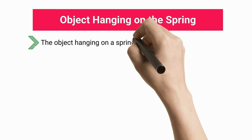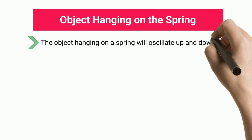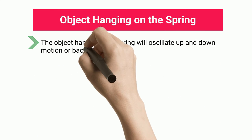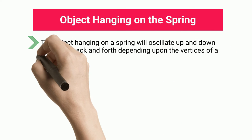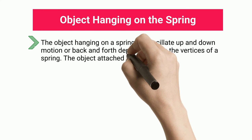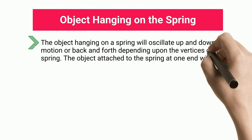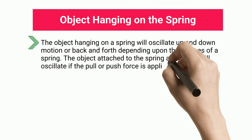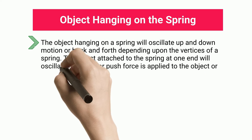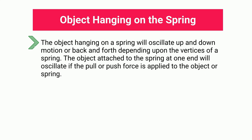Object Hanging on the Spring. The object hanging on a spring will oscillate in an up and down motion or back and forth depending upon the properties of the spring. The object attached to the spring at one end will oscillate if a pull or push force is applied to the object or spring.